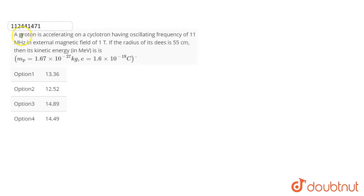The question is: a proton is accelerating in a cyclotron having oscillating frequency of 11 megahertz and external magnetic field of 1 tesla. If the radius of the D is 55 cm, then what is the kinetic energy? Mass of proton is 1.6 into 10 to the power minus 27 kg and electron charge is 1.6 into 10 to the power minus 19 coulomb.